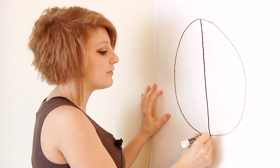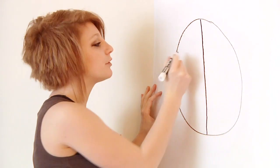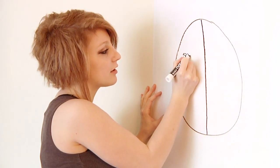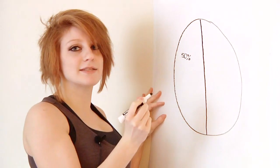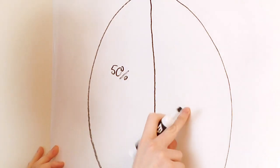I'm going to divide it in half to make 50% because this is half of the circle. When making a pie chart, you can write down how much it is and what it's labeling. I'm going to divide this half again.